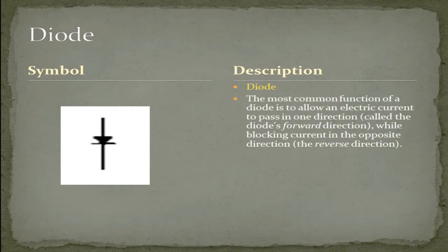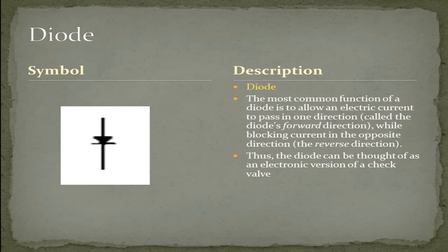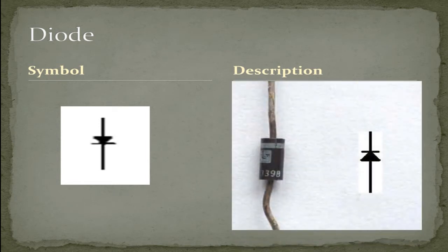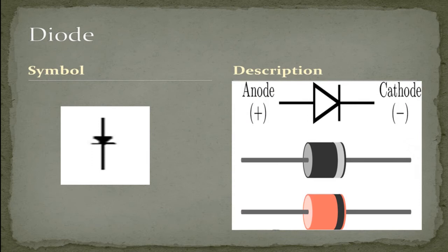The diode. The most common function of a diode is to allow an electric current to pass in one direction, called the diode's forward direction, while blocking current in the opposite direction, the reverse direction. Thus, the diode can be thought of as an electrical version of a check valve. This unidirectional behavior is called rectification and is used to convert alternating current to direct current. Here's an example of one of many style diodes. The arrow represents the flow of electrons. It goes from the positive to the negative.